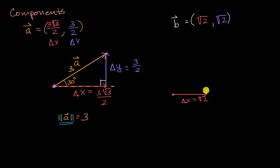And then its Y component would also be square root of two. So I could write our change in Y over here is square root of two. And so the vector would look something like this. It would start here and then it would go over here.